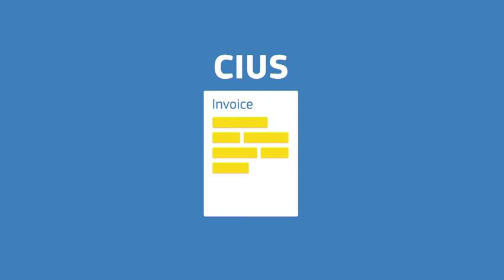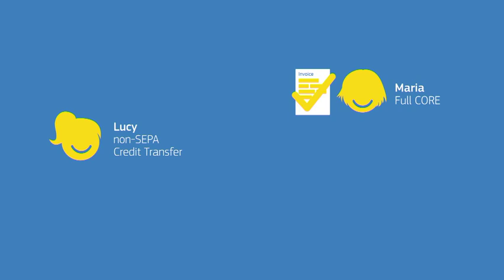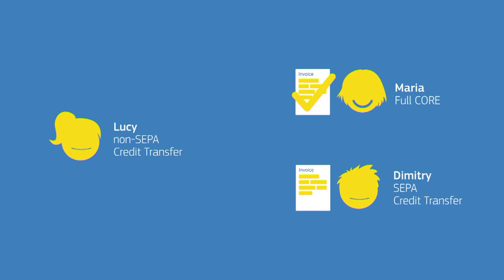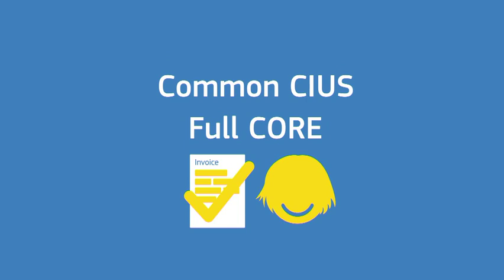However, even though a CIUS complies with the European norm, it may still challenge interoperability. In our example, Maria supports the full core invoice without restrictions and Lucy always uses non-separate credit transfer as a payment option in her invoices. She can send her invoice to Maria who can process it without an issue, but when sending to Dimitri she must adjust her invoice to Dimitri's CIUS. To limit such conflicts and reduce the need for adjustment, it is advised that buyers are able to receive the full core invoice or adopt common CIUS that are widely used.